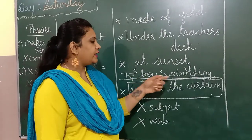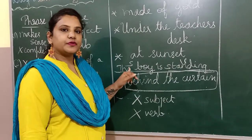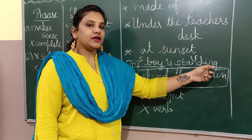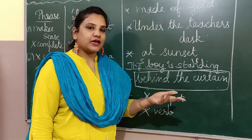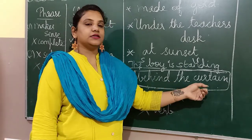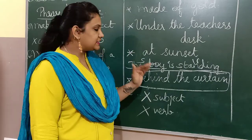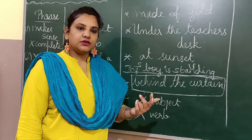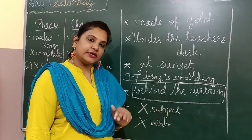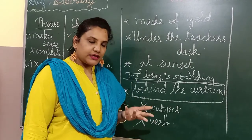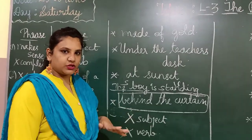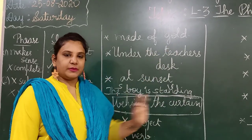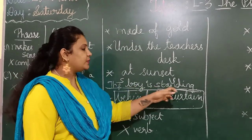For example, 'the boy is standing' — this is a clause. It has a subject and it has a verb. Now I can say that this is an incomplete sentence because we don't know where he is standing. 'Behind the curtain' — when I say 'the boy is standing behind the curtain,' it gives you the complete sentence. If I just say 'the boy is standing,' you won't know where the boy is standing. So it may or may not give complete information, but it always makes sense and it always has a subject and a verb.